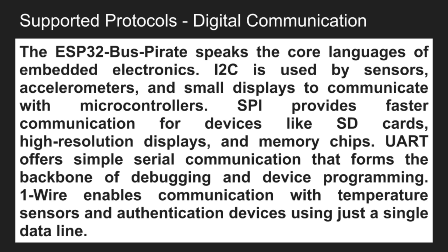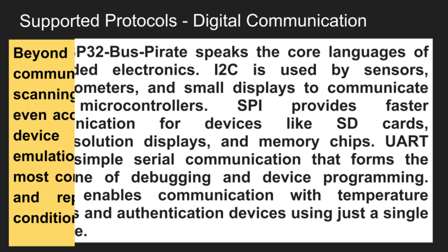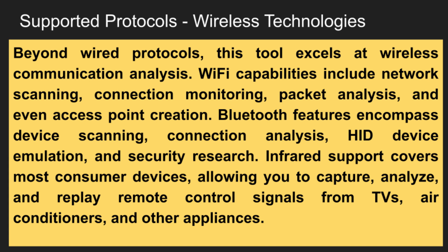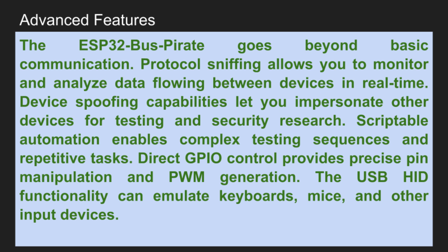Let's talk about what this device can actually do — the list is impressive. First, it speaks all the major languages that electronic devices use: I2C, which is the language sensors use to talk to microcontrollers; SPI, a faster version used by displays and memory cards; UART, serial communication and the most basic form of device chatter; and 1-Wire, used by temperature sensors and key fobs. But here's where it gets really exciting — it can also scan for Wi-Fi networks, even hidden ones.